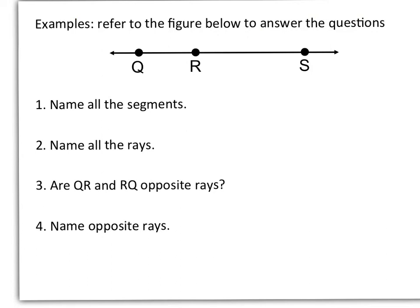Alright, so let's look at some examples of this. We're going to refer to the figure below to answer the questions. Number 1 says name all the segments. And remember we said a segment is part of a line. So I could call this we have segment QR, we have segment QS, we have segment RS. And actually that's it. Reversing the letters, you still have the same line segment.